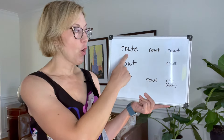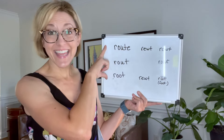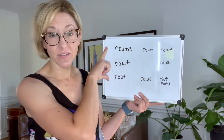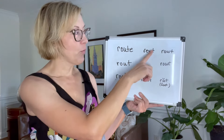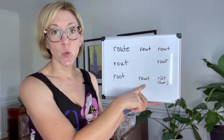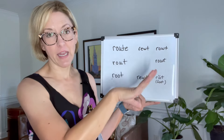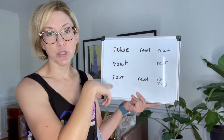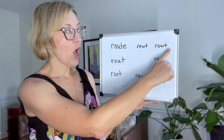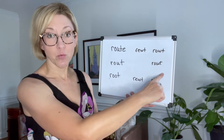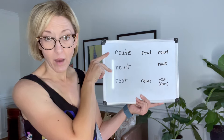For 'root' and 'route,' these can be pronounced the same way, so these would be homophones. We are going to add that 'ooh' vowel — that puckered vowel — and end with a T: 'root,' 'root.' We can also say 'route' and 'route,' and then those two words would be homophones.